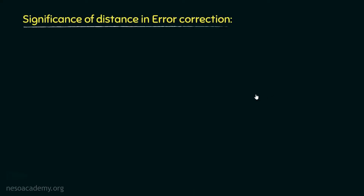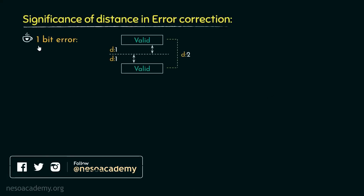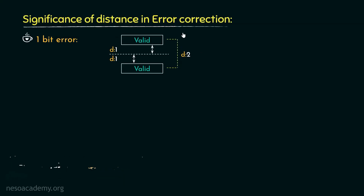Now if you remember, during the previous session, we learnt about 1-bit errors. Basically, in order to detect a 1-bit error, the distance between two valid patterns must at least be 2. Now this configuration of the code is sufficient for error detection but not error correction.